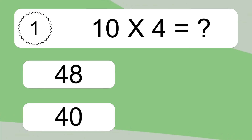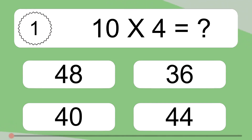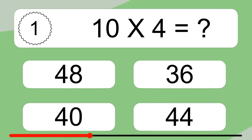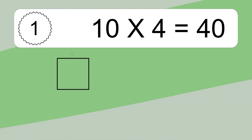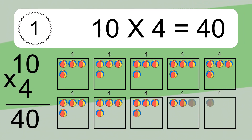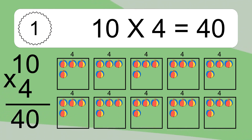10 times 4 equals what? 10 times 4 equals 40. We have 10 boxes and each box has 4 colorful balls inside. If you count all the balls in all the boxes together, you will have 10 times 4 balls. This equals 40 balls.